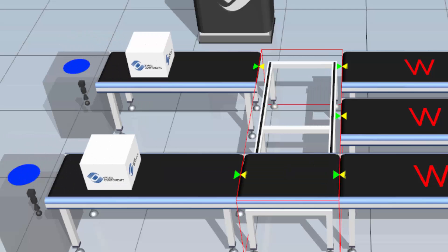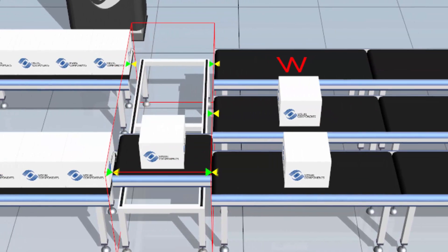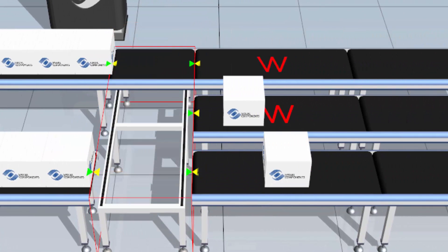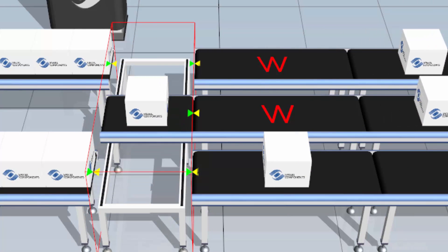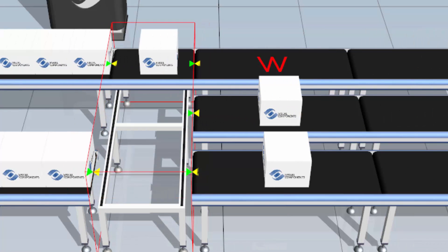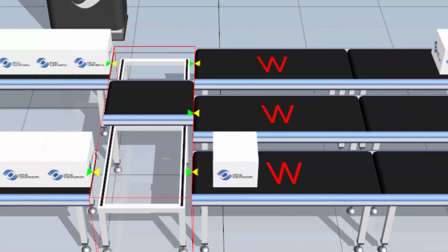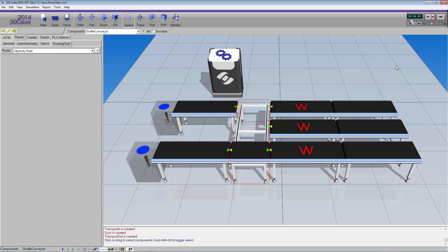Clicking done, and now running the simulation again — you see the three parts move, then the two parts move, and now it loops back.